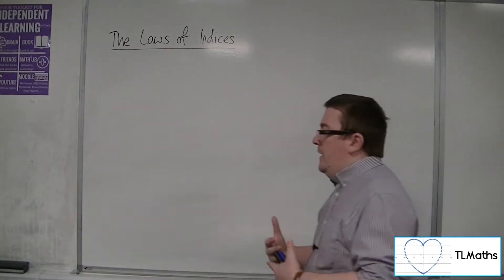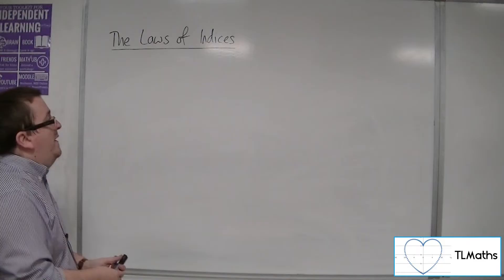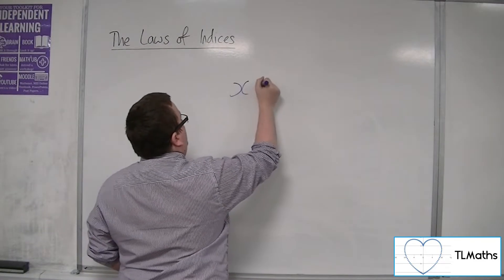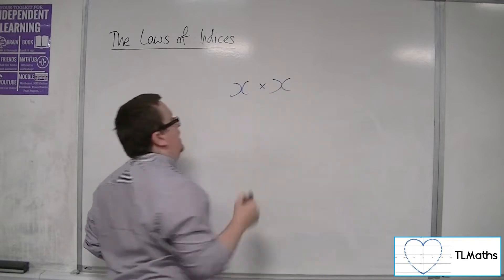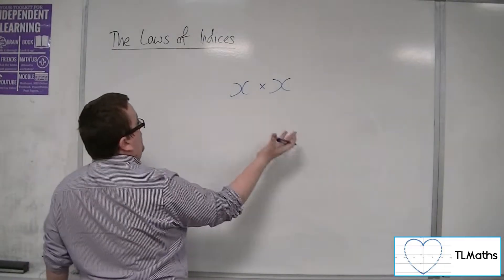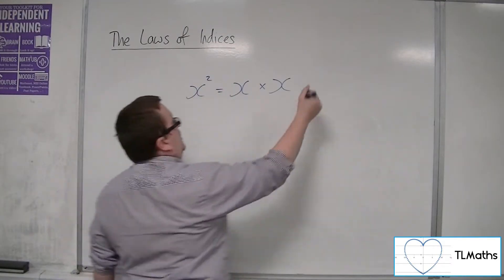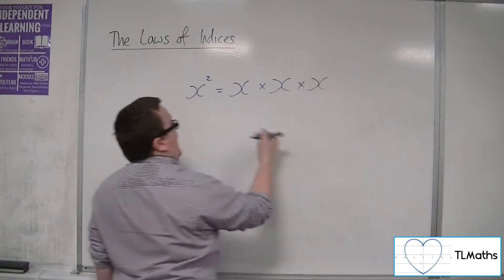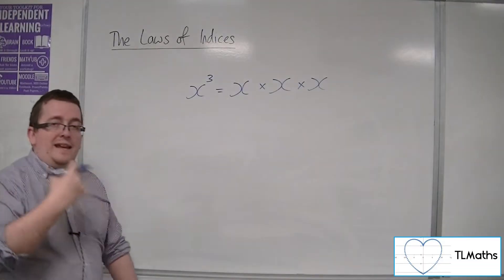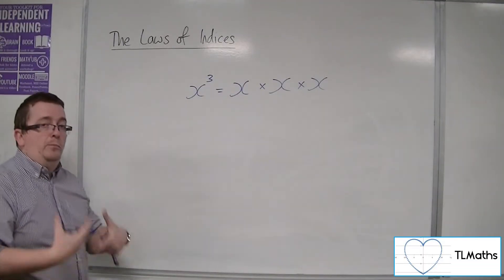Let's start off with the concept of building up indices and where they're really coming from. We want a shorthand notation for multiplying two unknowns together, for example. We should know that that is x squared. And so if I have x times x times x, that becomes x cubed. So the index is telling us how many times I'm multiplying x by itself.